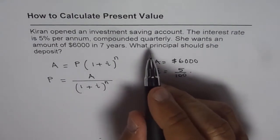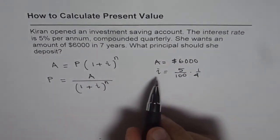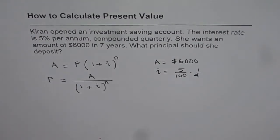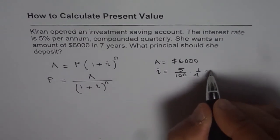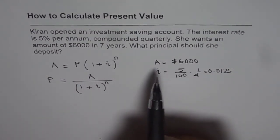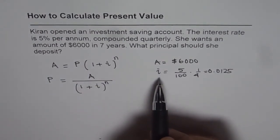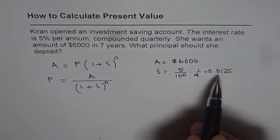Compounding quarterly means one-fourth. So one-fourth of this. So that is the interest. So we can calculate the interest rate, which is 5 divided by 400, which is equal to 0.0125. So during the compounding period of one quarter, interest charge will be at the rate of 0.0125.